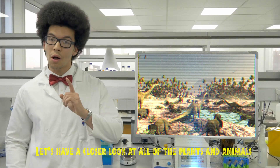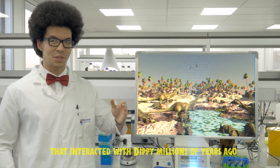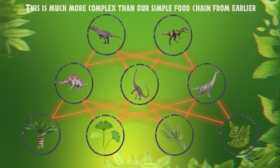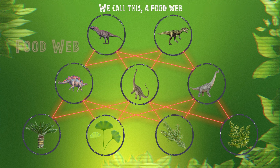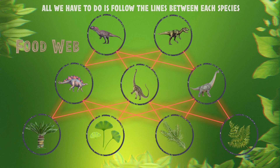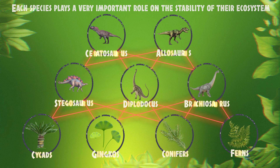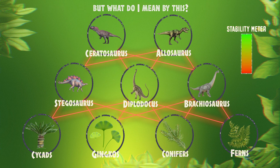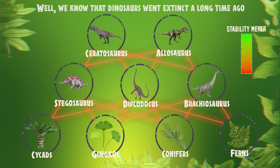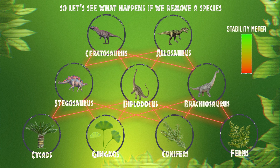Let's have a closer look at all of the plants and animals that interacted with Dippy millions of years ago. This is much more complex than our simple food chain from earlier — we call this a food web. All we have to do is follow the lines between each species and this tells us who was eating who. Each species plays a very important role in the stability of their ecosystem.